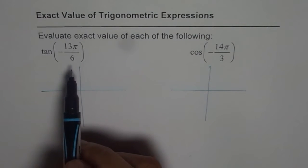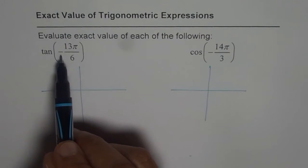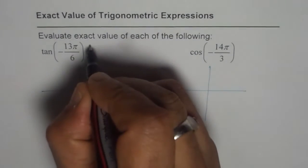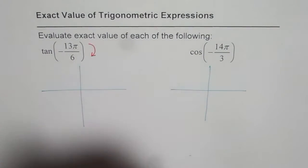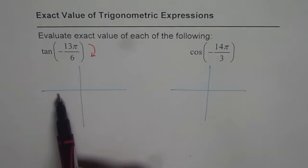Now, first step, let's figure out in which quadrant we land. Minus means we are moving in which direction? Clockwise direction. So minus means you are moving in clockwise direction. π by 6 means we will divide this π into 6 portions.